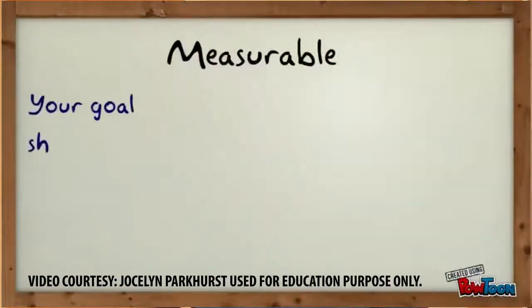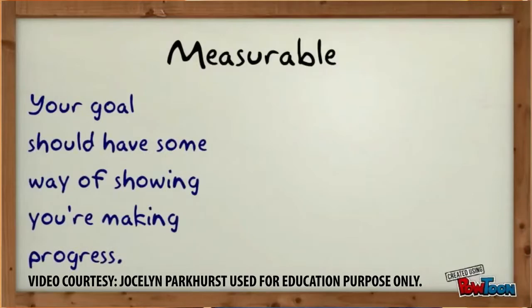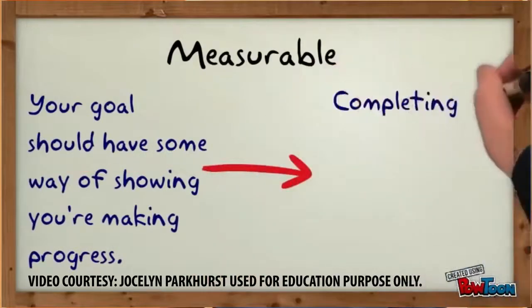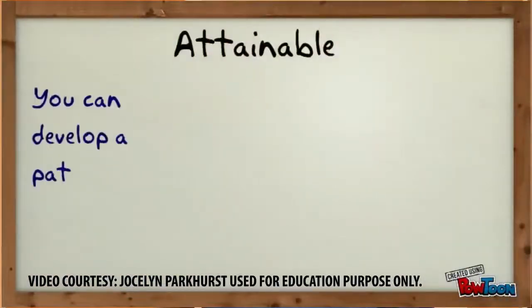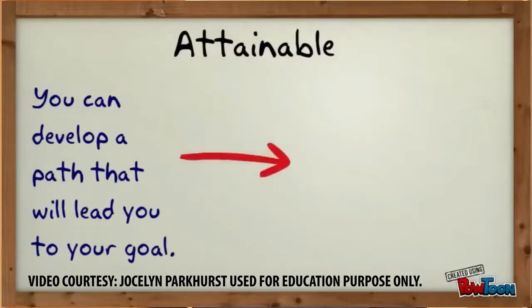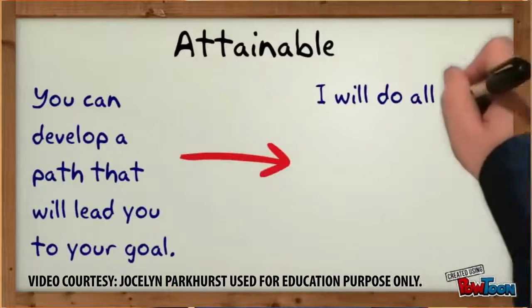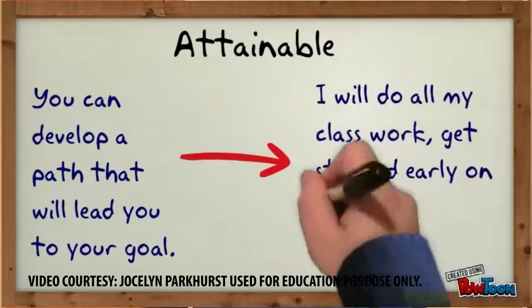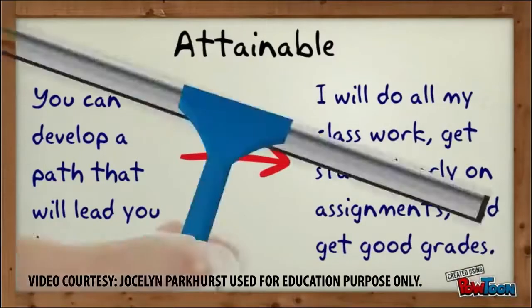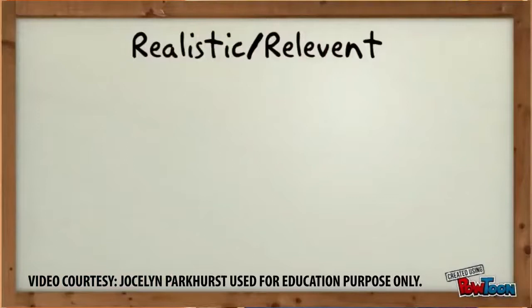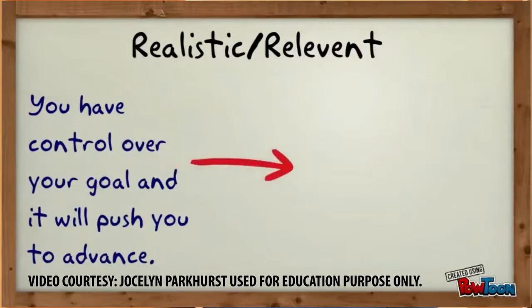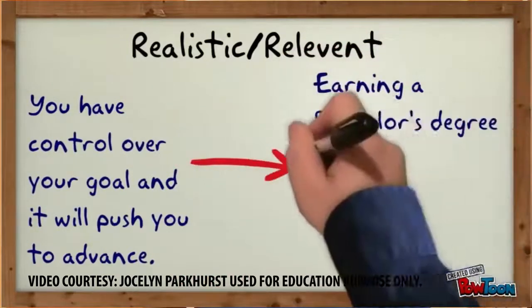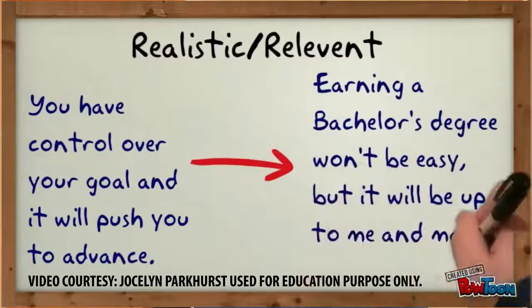Measurable means your goal should have some way of showing you're making progress. An example: completing my classes with good grades will show my progress. Attainable means you can develop a path that will lead you to your goal. An example: I will do all my classwork, get started early on assignments, and get good grades. Realistic means you have control over your goal and it will push you to advance. An example: earning a bachelor's degree won't be easy but it will be up to me and make me better.